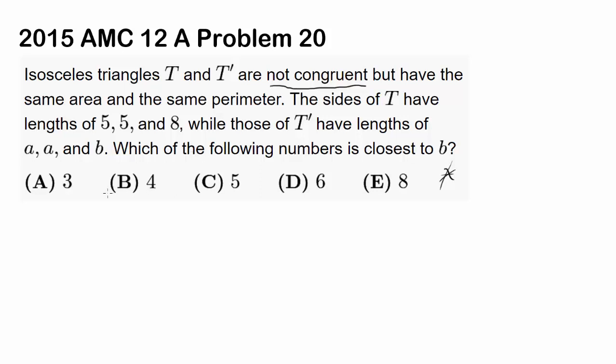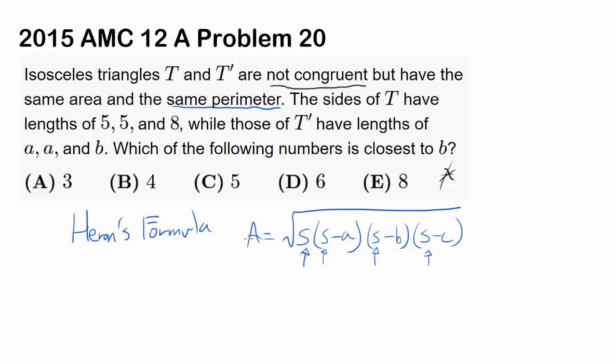So we have the same perimeter and area. That's making me think of Heron's formula. Area of a triangle is equal to square root of semi-perimeter times semi-perimeter minus side A, semi-perimeter minus side B, times semi-perimeter minus side C. We know all these semi-perimeters have to be the same for both triangles because they have the same perimeter. Dividing by 2 is going to get you the same semi-perimeter.